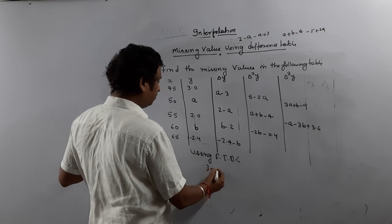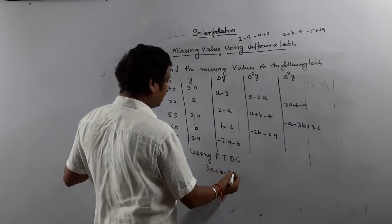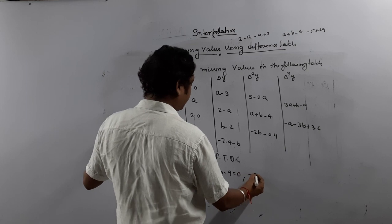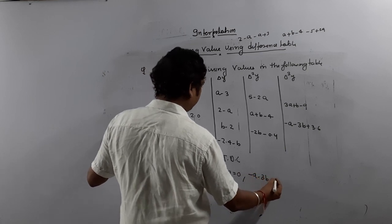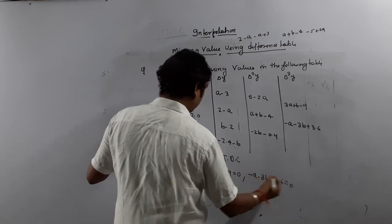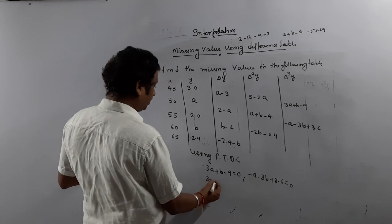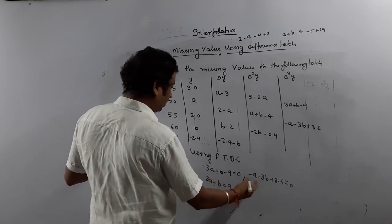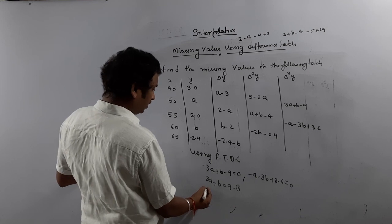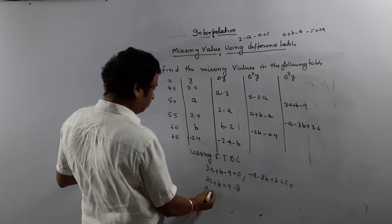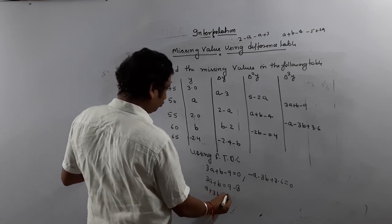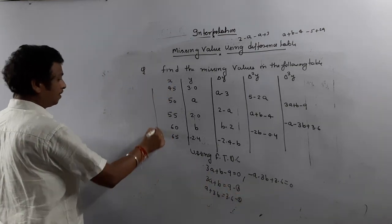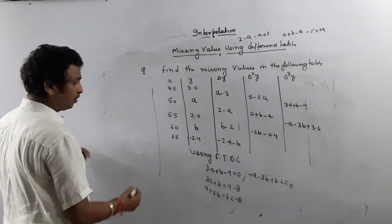Applying the Fundamental Theorem of Difference Calculus, we set these equal to zero. So: 3A plus B minus 9 equals 0, and minus A minus 3B plus 3.6 equals 0. Therefore: 3A plus B equals 9 (first equation), and A plus 3B equals 3.6 (second equation).